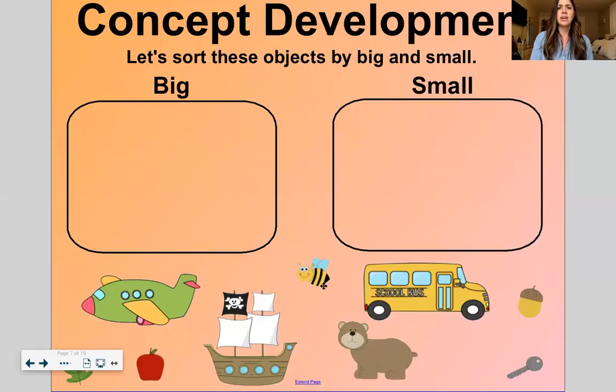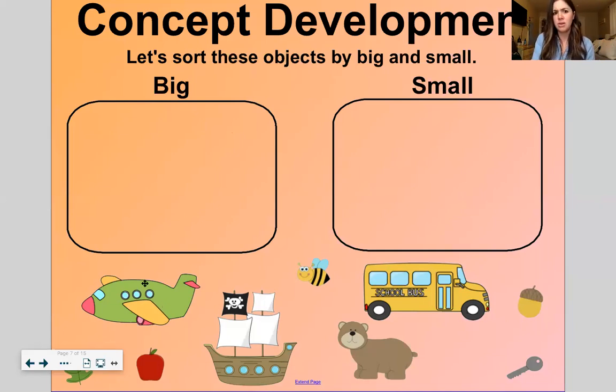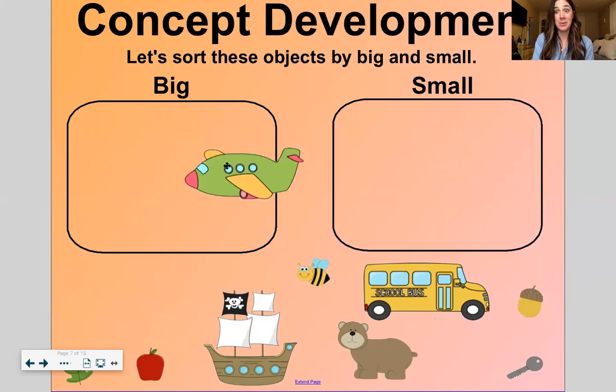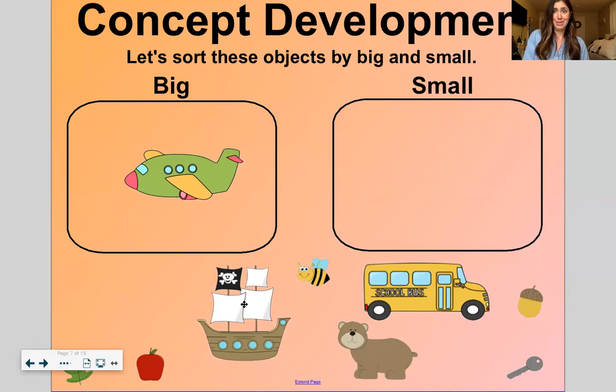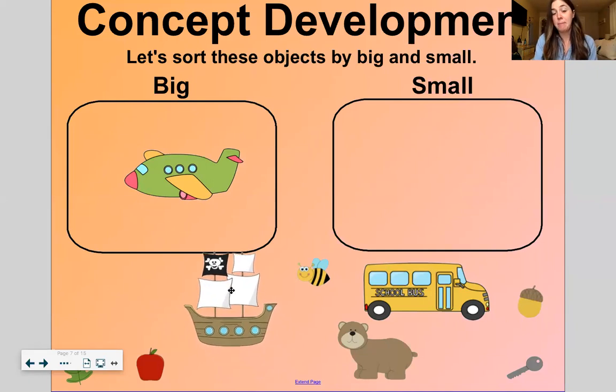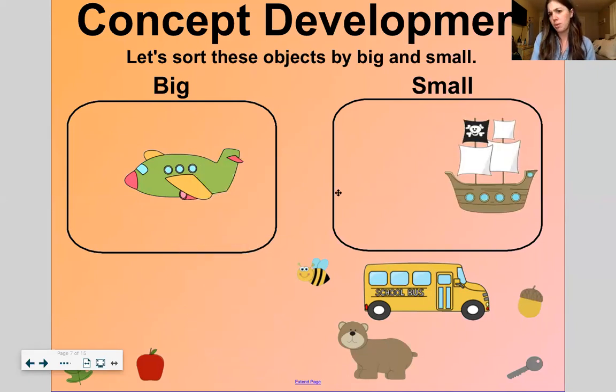We have a category here that says big and small. Big, small. Do that with me. Big, small. Let's see. Is this big or is this small? Big, small. Blurt. Big. That's a big job. What about this pirate ship? Big or small? Blurt. Big. Good.